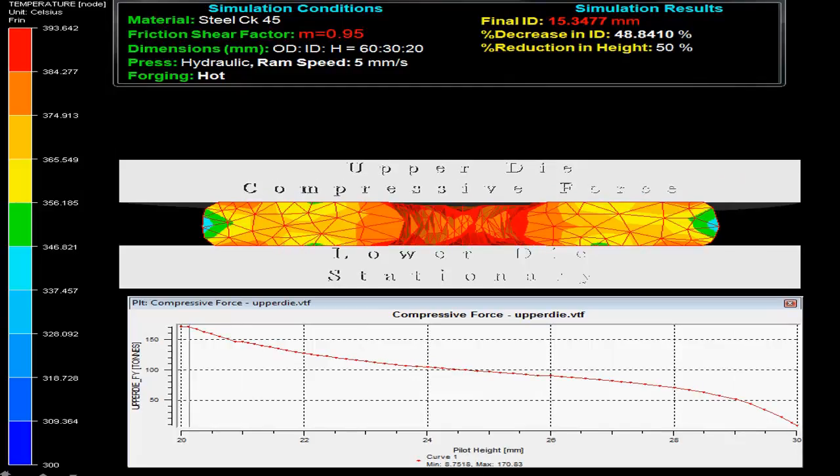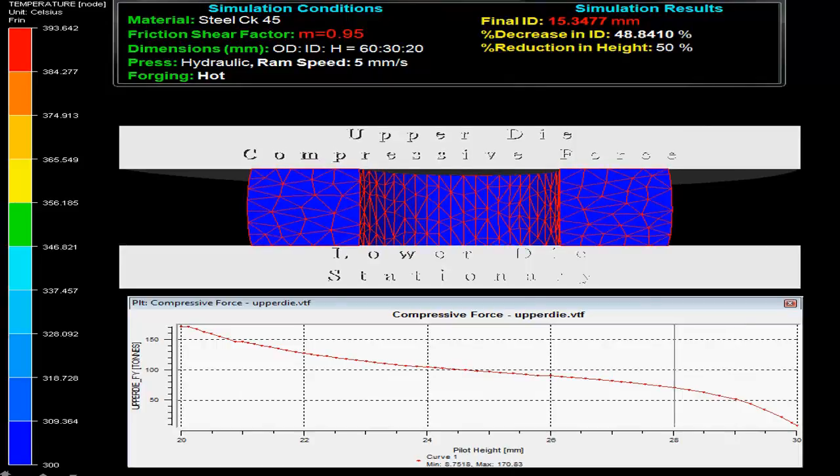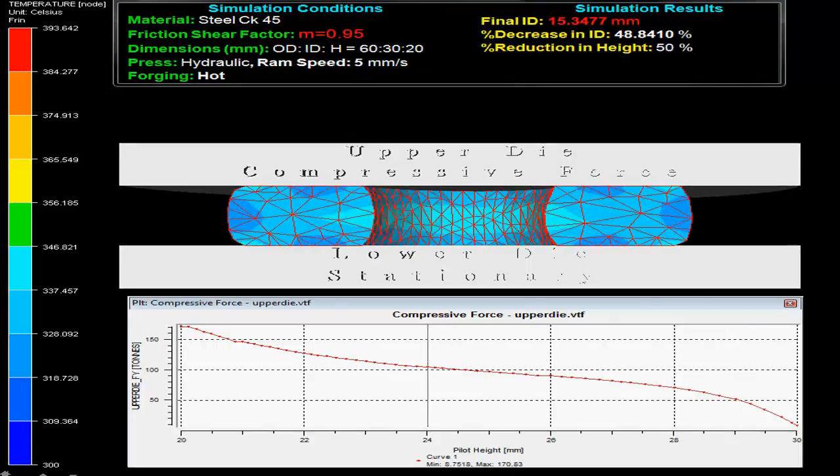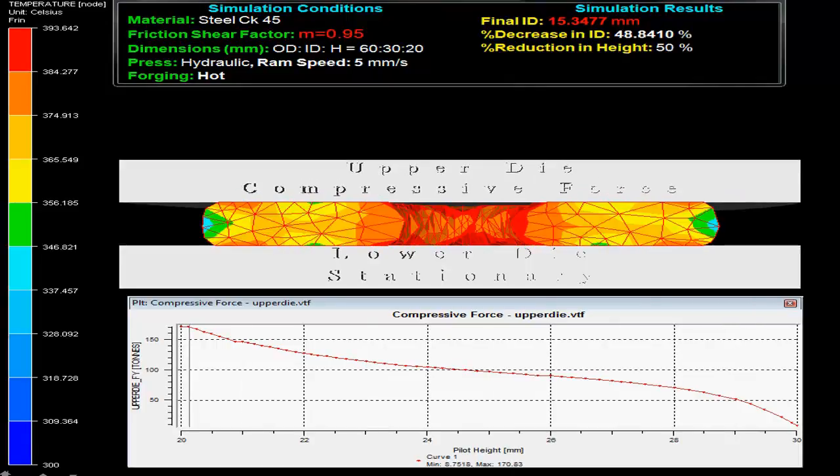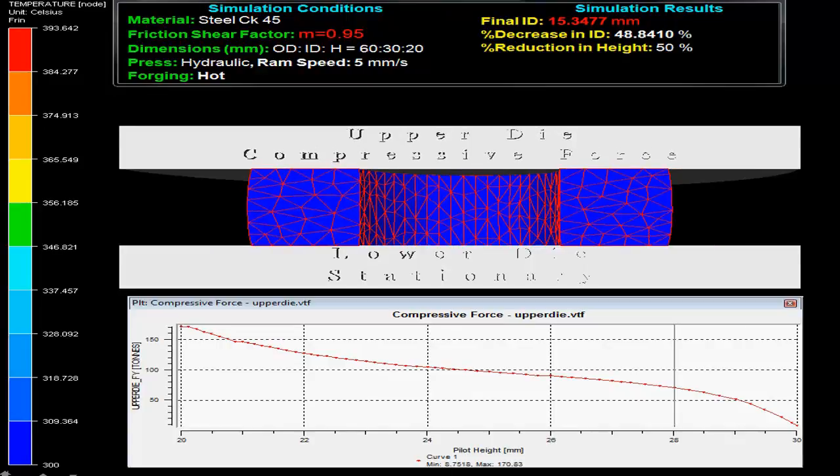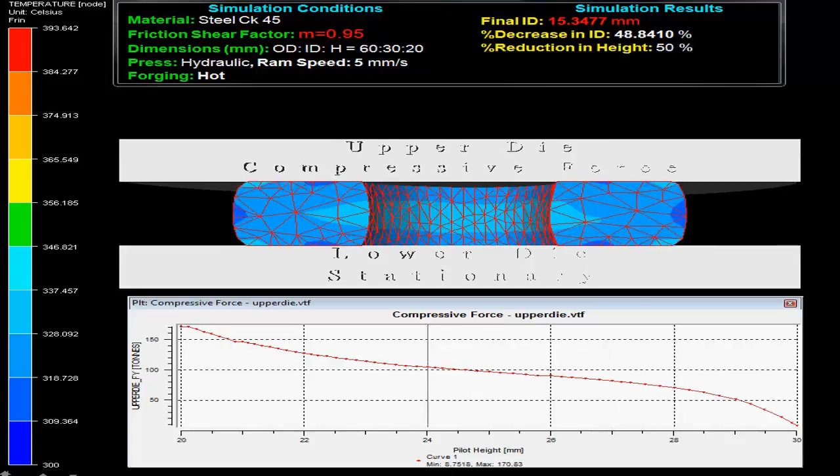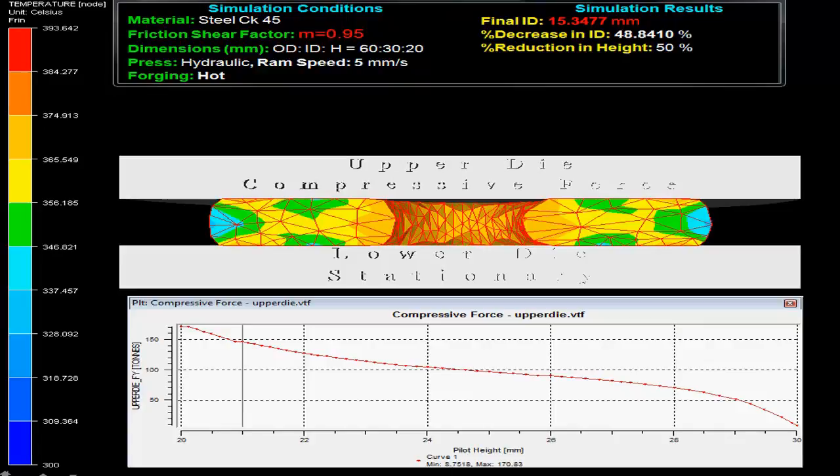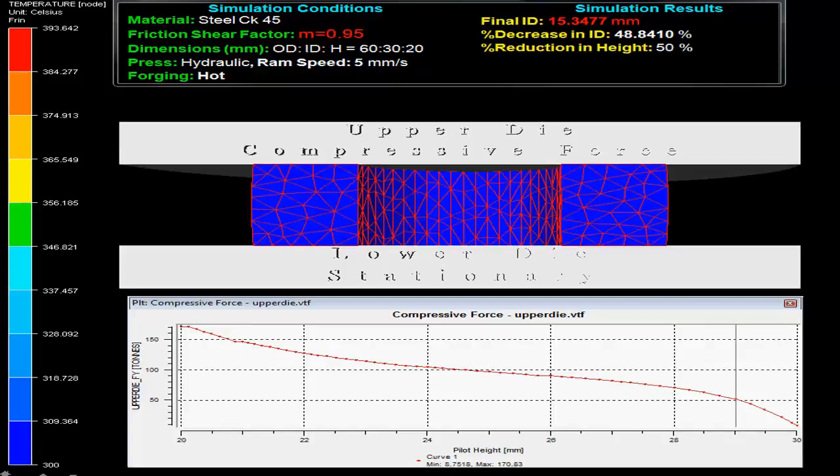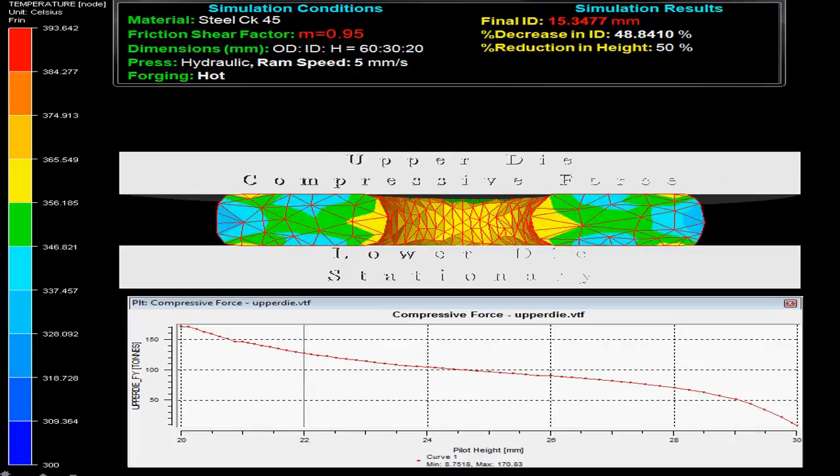The process uses a hydraulic press with ram speed of 5 mm per second for hot forging. On the top right side, simulation results show the final inner diameter as 15.3 mm, with a decrease in inner diameter by 48.3% on 50% reduction in height.